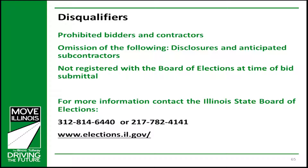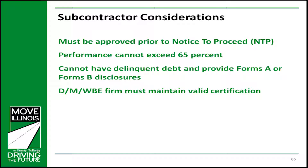The contractor is required to submit a subcontractor plan. You must have your team determined and documented to the extent known when you submit your bid. Although subcontractor approvals are required after contract award, the prime contractor should be aware that a subcontractor used on the project must be approved before they begin work. Unless otherwise stated in the contract, the contractor's percentage of self-performed work must be more than 35% — a contractor may subcontract no more than 65% of the work. The proposed subcontractor must not have delinquent debt with the State of Illinois and must provide Forms A or Forms B disclosures. DMWBE firms submitted for DBE credit must maintain their certifications.